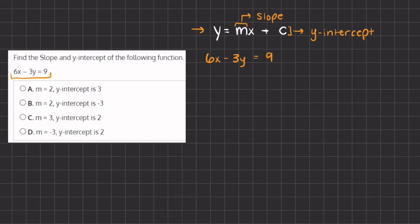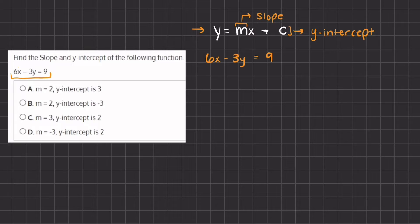Now in order to find our y-intercept, that is where our linear function crosses the x-axis, and so where our function crosses the x-axis, the x value is going to equal 0. We can set x to equal 0 and then find the y-intercept.